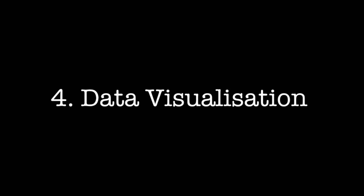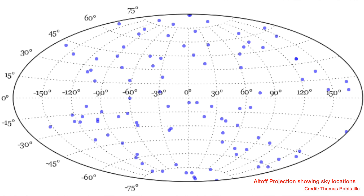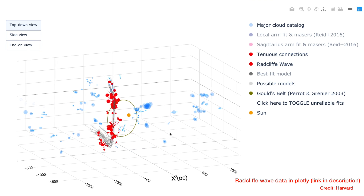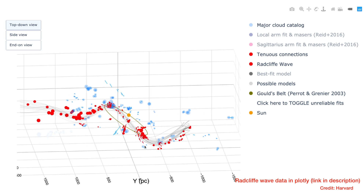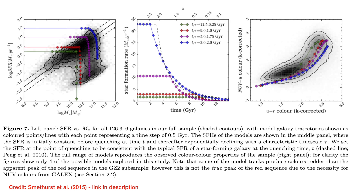Number four: data visualisation. Once you've done all this data analysis and model fitting, you really need to be able to interpret all that information. One way of doing that is to actually see your data and visualise more clearly what's going on — whether that's with a simple histogram of the spread of a certain measurement, or the location of objects on the sky, or even interactive graphics that you can play around with to see relationships more clearly. A few well-placed commands in Python and you can make some of the most beautiful scientific plots that will one day hopefully get published in a research paper.